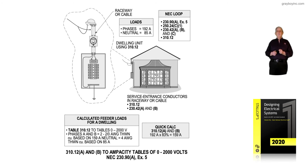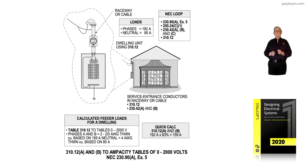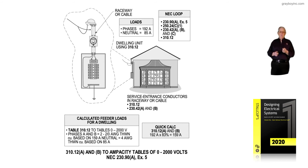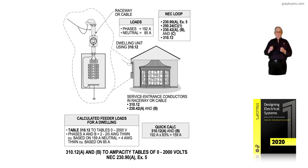It's a dwelling unit as defined in Article 100 of the NEC. The NEC is suggesting you read very carefully 230.90EA exception 5, which gives you the permissive rules for overcurrent protection and conductors. Also review 250.24C, 230.42A and B and C, and the big one, 310.12.